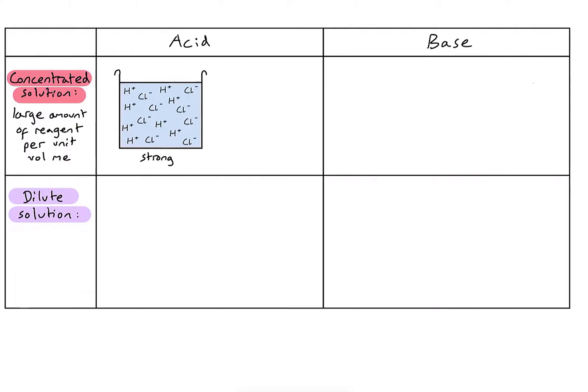Looking at a concentrated solution of a weak acid — ethanoic acid — we see a slightly different story. We still have lots of material in the solution, but because it's a weak acid, only a few of those molecules have actually dissociated to form ions.